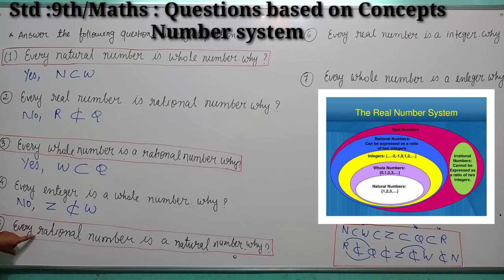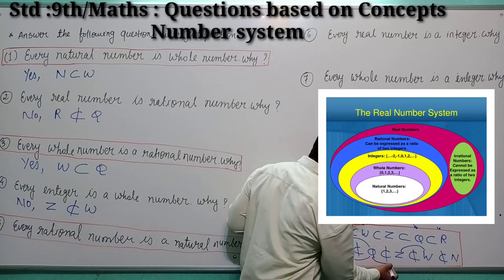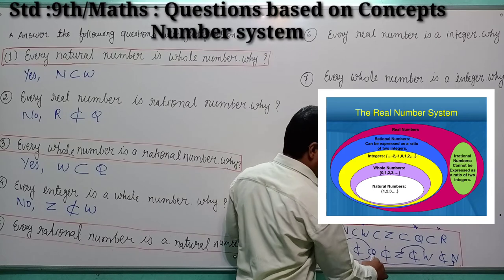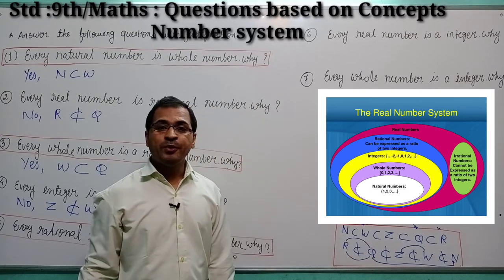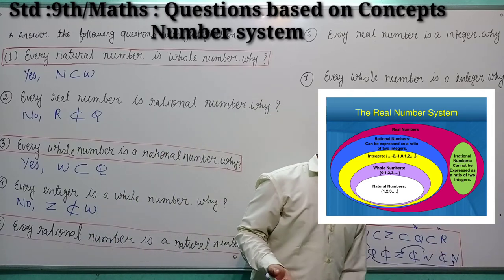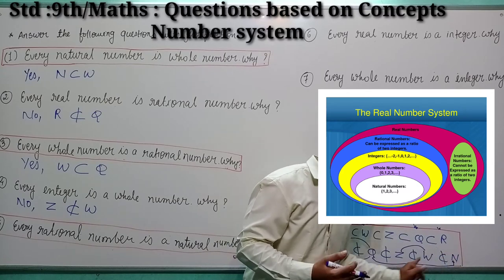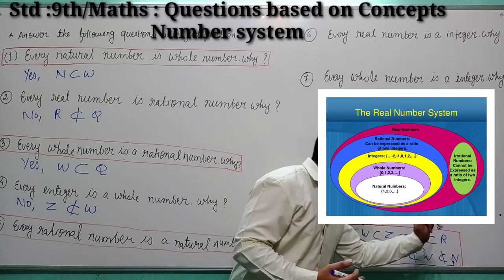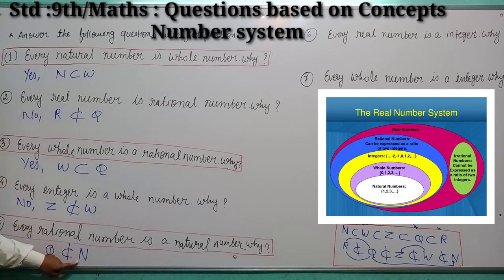Question number 5: every rational number is a natural number. Is it possible? No. Because generally rational numbers can be written in p/q form including positive and negative integers, while in natural numbers only positive integers are there. So every rational number can't be a natural number, because all elements of rational number are not included by natural number.